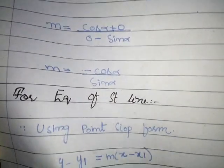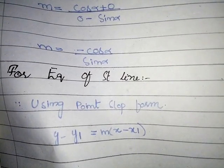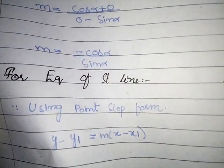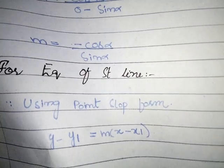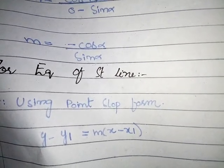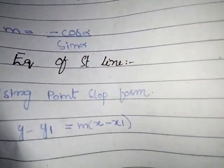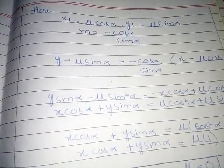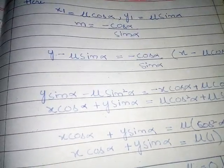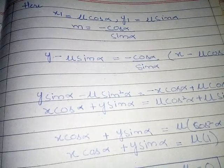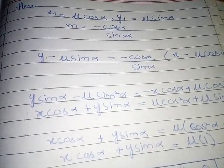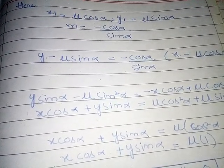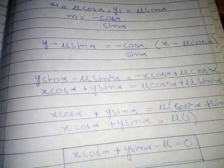For the equation of the straight line, we use the point-slope form: y - y1 = m(x - x1). Here x1 = μcosα, y1 = μsinα, and m = -cosα / sinα.